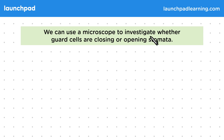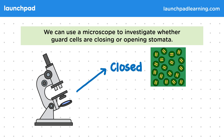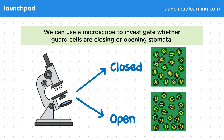We can use a microscope to investigate whether guard cells are closing or opening stomata. If the stomata are closed, this is what they would look like through the eyepiece of the microscope. If they were open, this is what they would look like. As well as looking at whether they are closed or open, can you think what else we might explore about stomata?